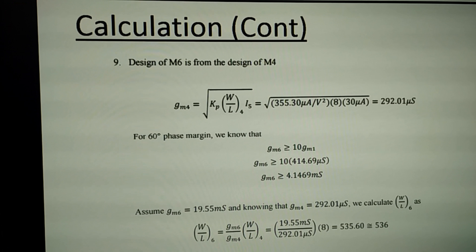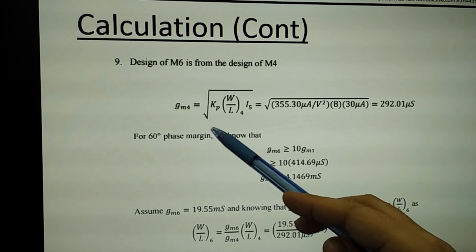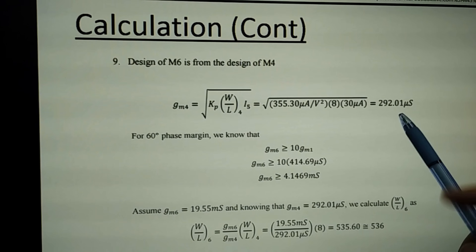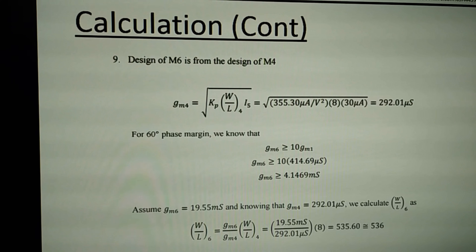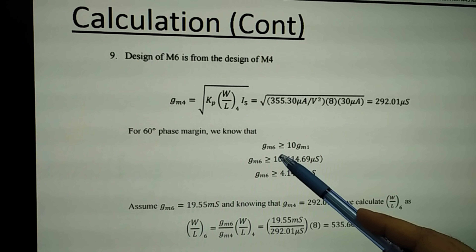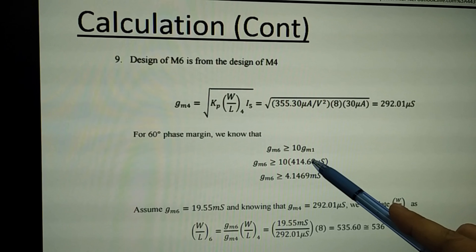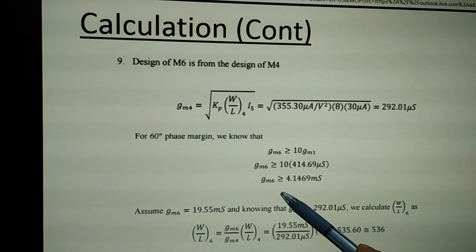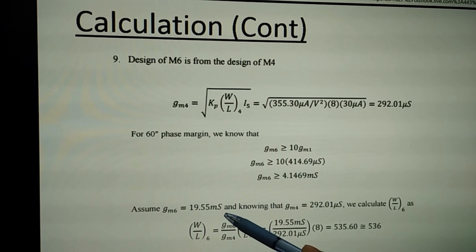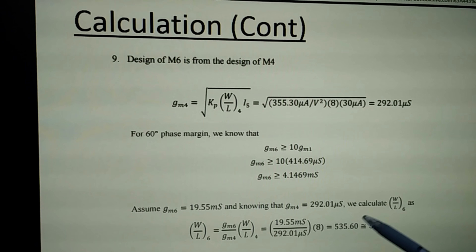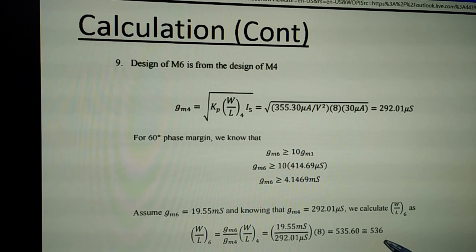For M6, we first calculate GM4 equal to 292.01 microsiemens. For a 60-degree phase margin, GM6 must be greater than 10 times GM1. Since we already have GM1, we multiply by 10 to get GM6. By assuming GM6 and GM4 values, we calculate the aspect ratio for M6, which is approximately 536.